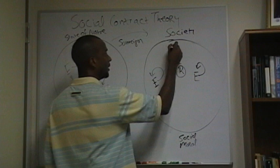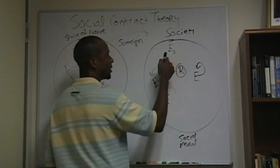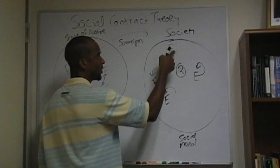And we'll label this sovereign. He or she is still a psychological egoist. We'll just label it E, small s for sovereign.